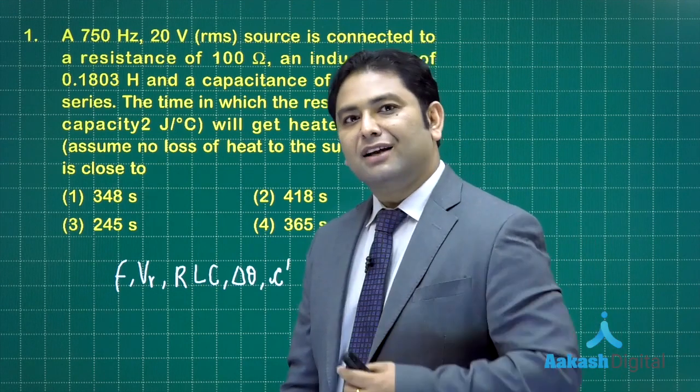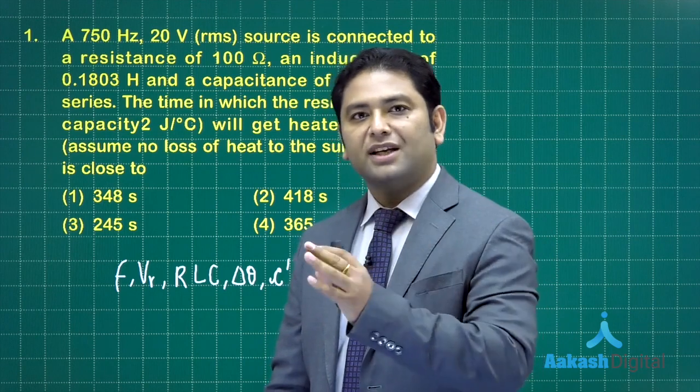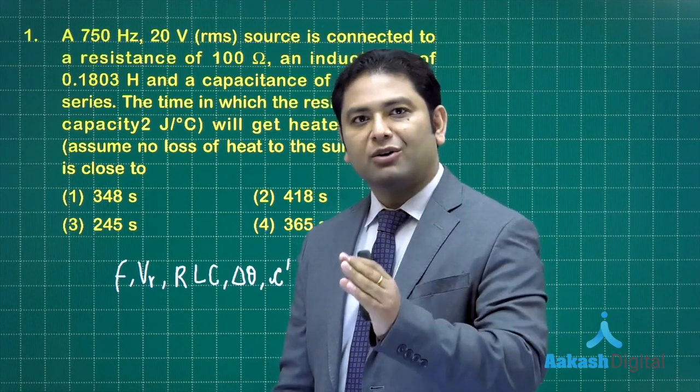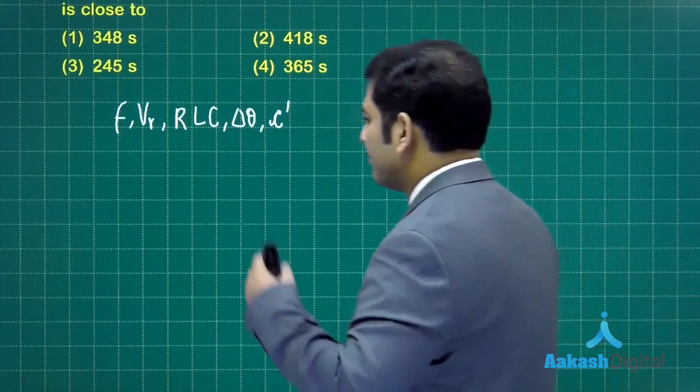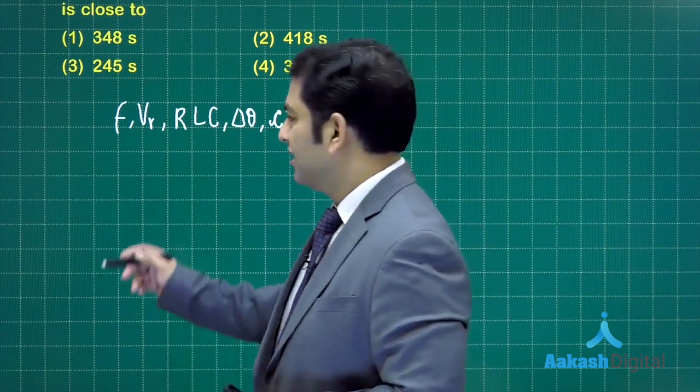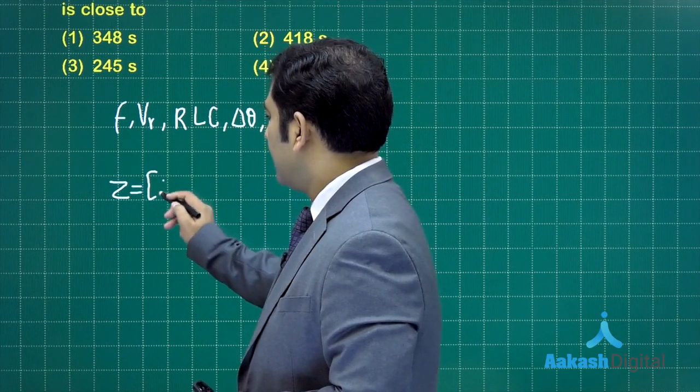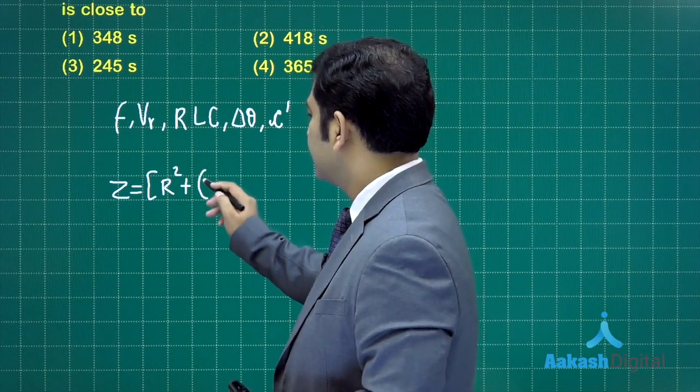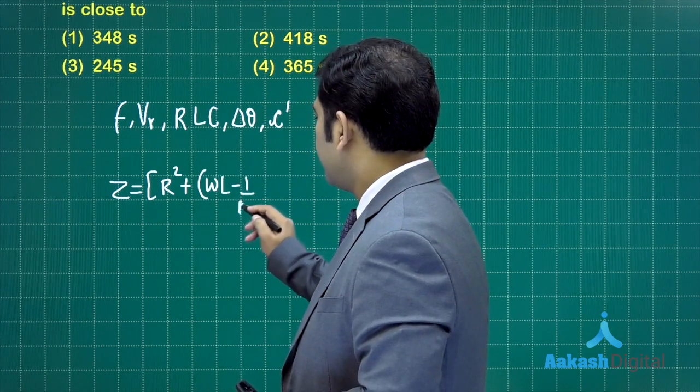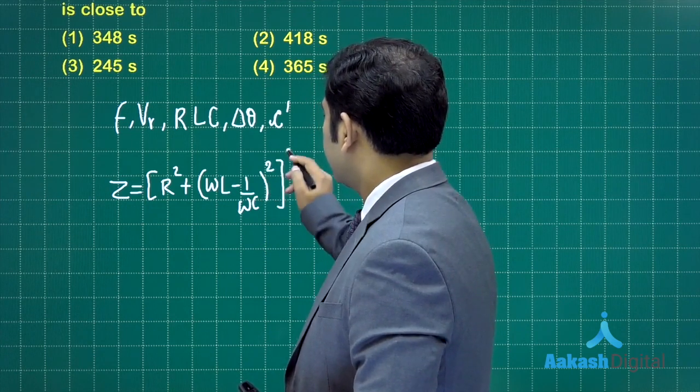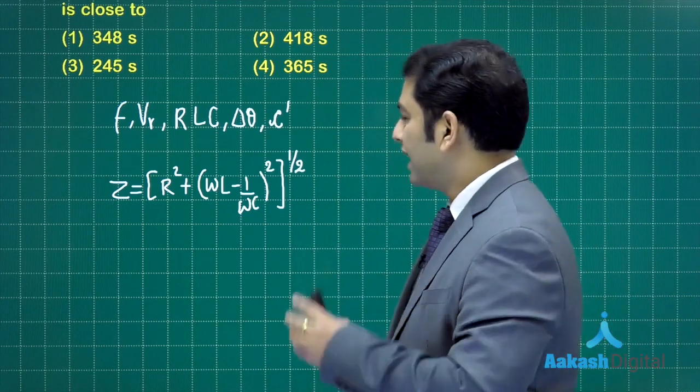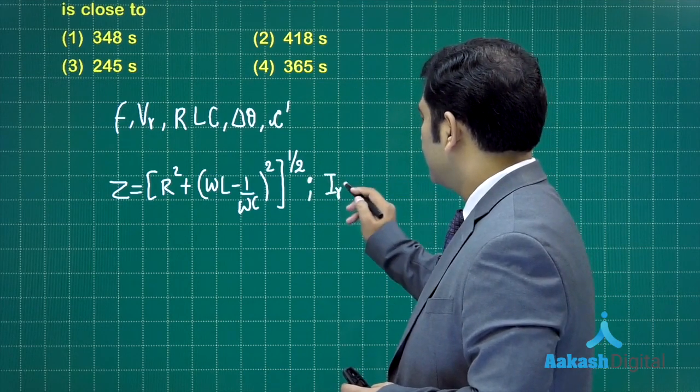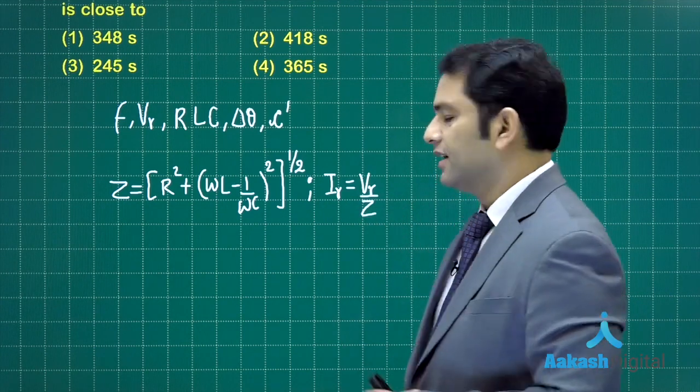So these are the parameters, and we need to calculate the time. Now, heating effect is associated with the RMS value. So first we need to calculate RMS, and in order to do that we require to calculate the impedance. So let's break down the whole numerical into two main stages. The first one is calculating impedance and then calculating the RMS current. So here the impedance is, of course, R squared plus XL minus XC, so that's going to be omega L minus 1 by omega C whole square and root, because that's how we define the impedance for RLC series circuit. And once you calculate it, you can see the I_RMS will be equals to V_RMS divided by Z.